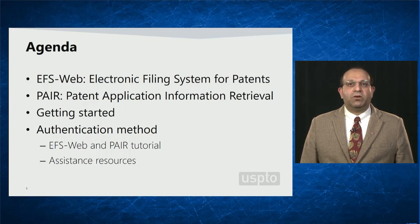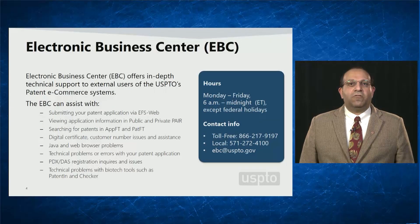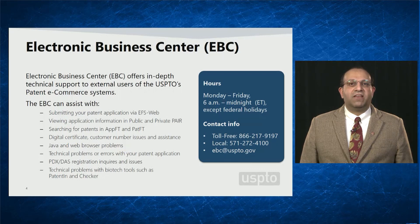PAIR provides USPTO customers a safe, simple and secure way to retrieve and download information regarding patent application status. We will also give an overview of how to get started using the EFS and PAIR systems, including information regarding the authentication method, and lastly, providing information on additional resources. For more detailed information, please contact the USPTO's Electronic Business Center at 866-217-9197 or via email at ebc@uspto.gov.